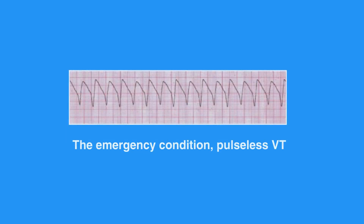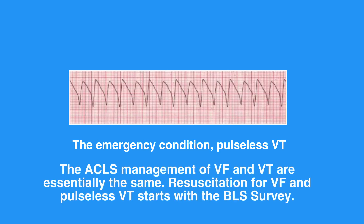The emergency condition of Pulseless VT occurs when ventricular contraction is so rapid that there is no time for the heart to refill, resulting in an undetectable pulse. In both cases, individuals are not receiving adequate blood flow to the tissues. Despite being different pathological phenomena and having different ECG rhythms, the ACLS management of Pulseless VT and VF are essentially the same.